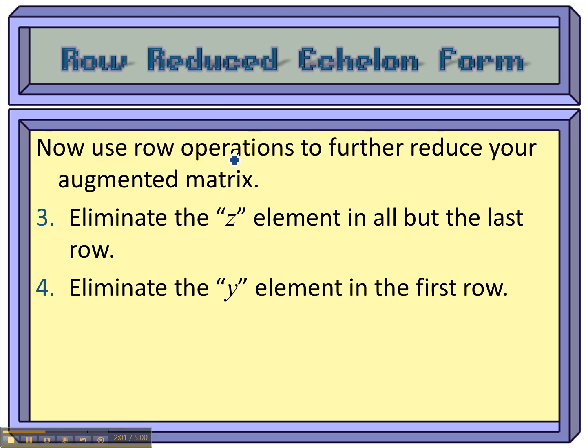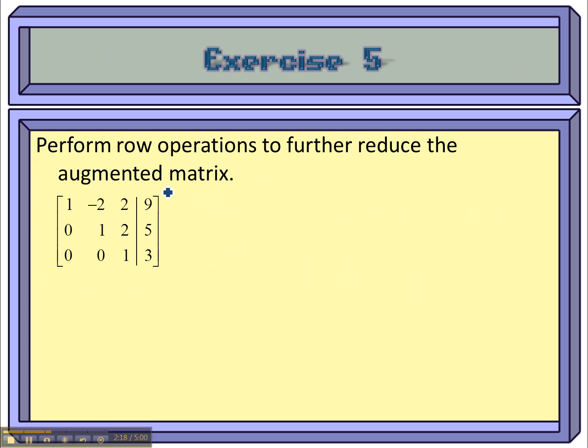To keep going, to put it into row reduced echelon form, where our final result will give us the answer, you want to eliminate the z element in all but the last equation, and then finally eliminate the y element in the first row. So this is how this goes. We're going to pick up where we left off on this matrix, and then we're going to keep going on it.